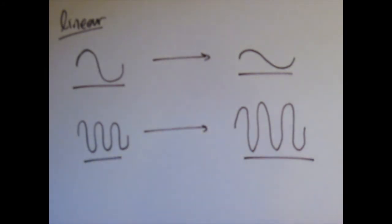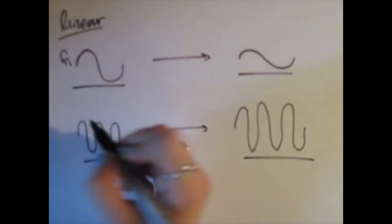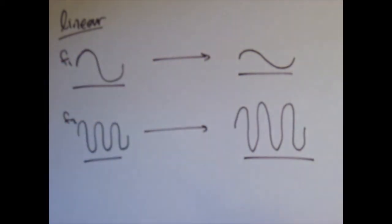Frequency in equals frequency out. Now, if you put in two driving frequencies, for example F1 and F2, when they come out all you get is a linear combination, or in mathematical terms, a superposition.